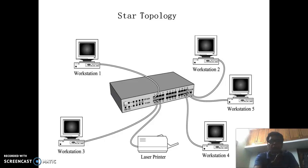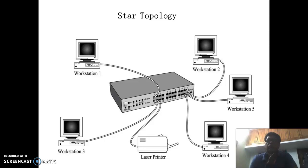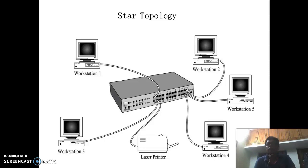The workstations are labeled workstation 1, 2, 3, 4, and 5, and we have also connected a laser printer to get printouts. The advantage of star topology is that if any one of the connections disconnects, there will be no effect on the other users — the other users can still access data and connect to each other.